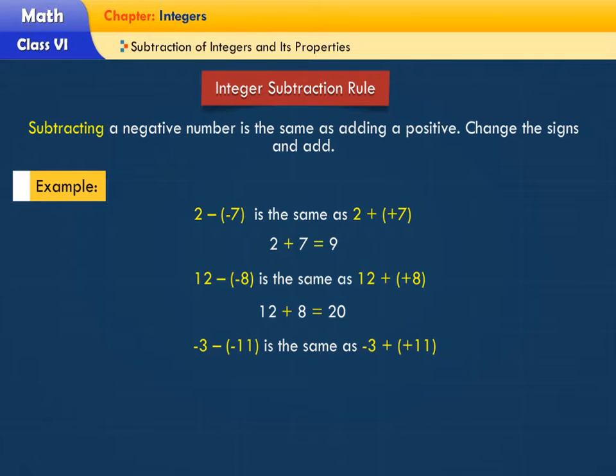Minus 3 minus minus 11 is the same as minus 3 plus plus 11. Minus 3 plus 11 is equal to 8.